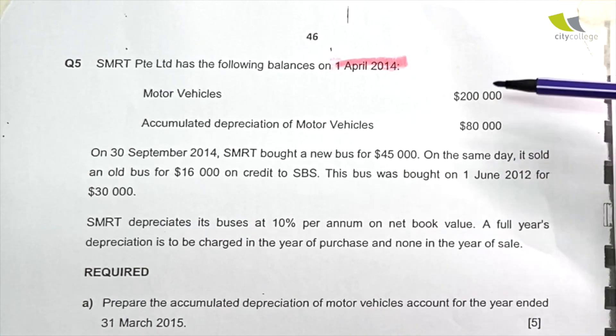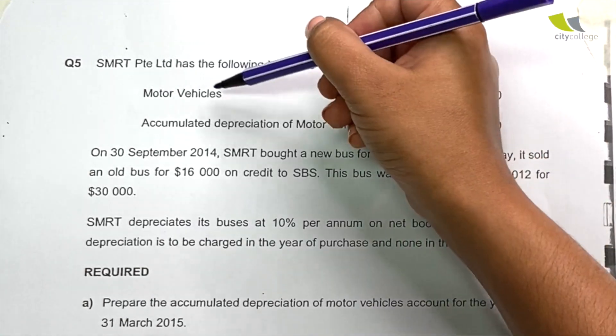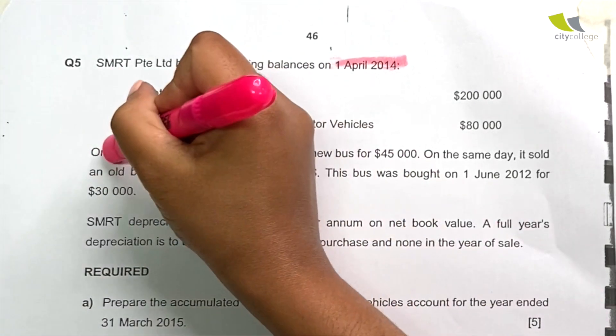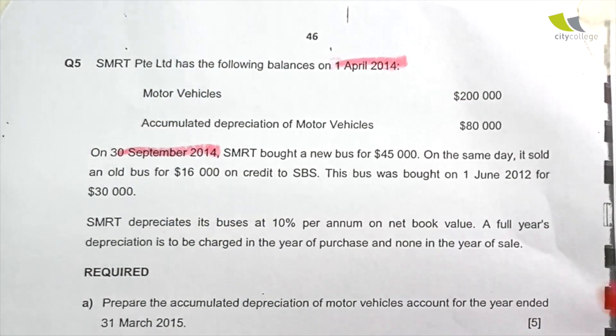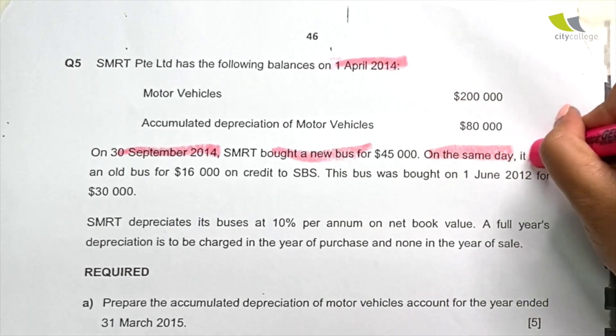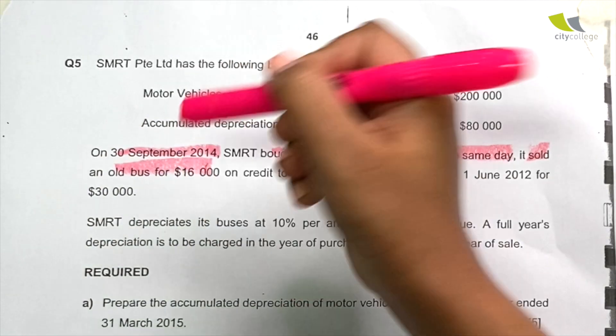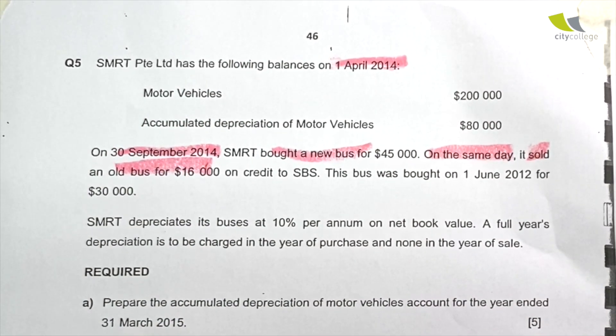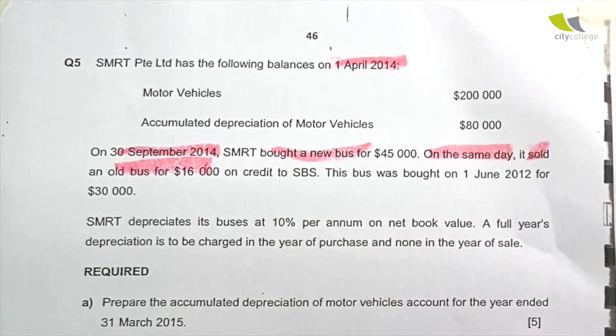And this $80,000 refers to the accumulated loss of this set of motor vehicles since the time they bought it. Let's read on. On 30th September, SMRT bought a new bus for $45,000. On the same day, it sold an old bus for $16,000 on credit to SBS. So it's a very busy day. 30th September is a very busy day.